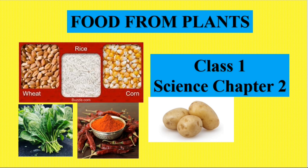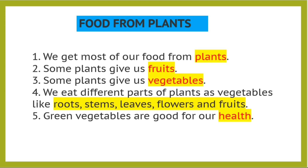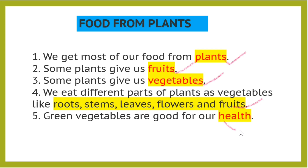Hello dear children. In our previous video we learned about different kinds of plants. Now here we will learn the different food items we get from plants. We get most of our food from plants. Some plants give us fruits, some plants give us vegetables. We eat different parts of plants as vegetables, like roots, stems, leaves, flowers, and fruits. Green vegetables are good for our health.